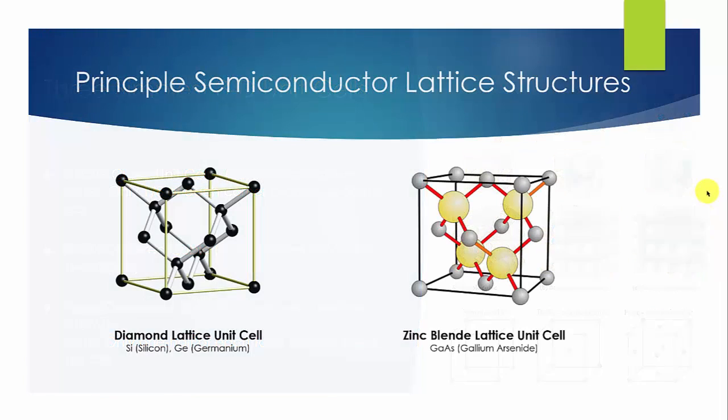We now discuss two of the common lattice structures for principal semiconductors. The left side structure is called a diamond lattice unit cell. The group four elements such as silicon and germanium both have such a structure. Diamond lattice unit cell is cubic, has atoms at each corner and at each face, but there are four additional atoms inside the cell.